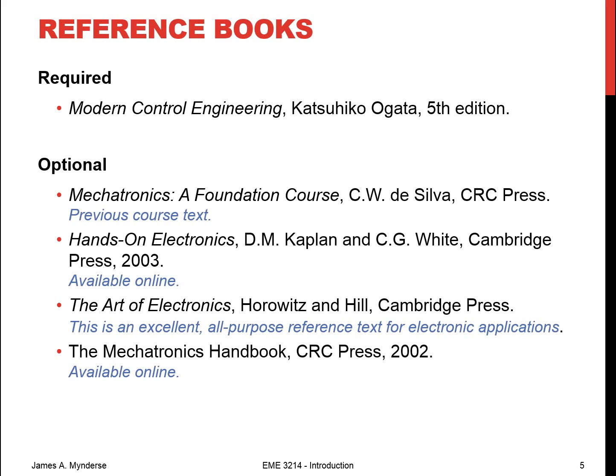The textbook for this class is called Modern Control Engineering by Ogata. We're going to use the fifth edition, which is the most recent one. I've got some optional textbooks listed there as well. Mechatronics: A Foundation Course is the previous course textbook — I find it to be a nice reference but not necessarily great for assigning problems. Hands-on Electronics can be found online. The Art of Electronics is essentially the Bible of Electronics. Also, the Mechatronics Handbook from CRC Press is another great reference — you can find copies online though I'm not going to link to them as it's copyrighted material.